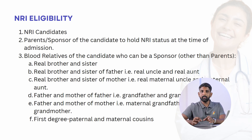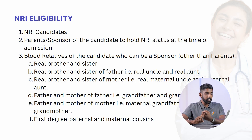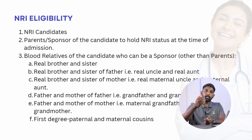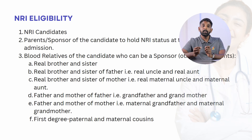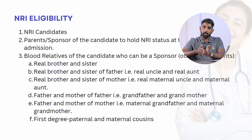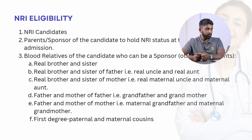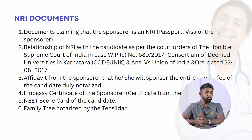Other than parents, the following relatives can sponsor a candidate: the candidate's brother or sister living abroad, uncle or aunt from both the father's side and mother's side, grandparents from both the father's side and mother's side, and finally first-degree cousins — that is, the children of your parents' actual brothers or sisters. These are all the eligible sponsors under NRI eligibility.